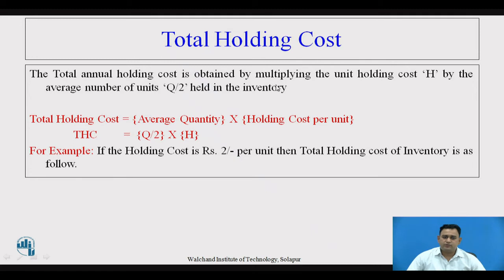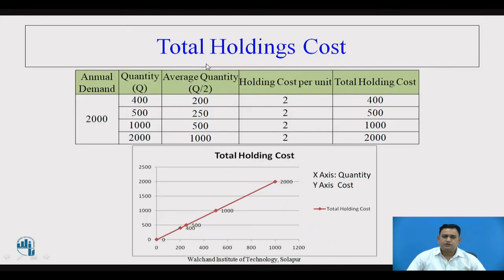The total holding cost is obtained by multiplying the unit holding cost H by the average number of units held in inventory, i.e., Total Holding Cost = (Q/2) × H. For Q = 400, average quantity = 200; holding cost = 200 × 2 = ₹400. Similarly, for Q = 500: ₹500; Q = 1000: ₹1000; Q = 2000: ₹2000. This gives a linear increasing line on the graph.